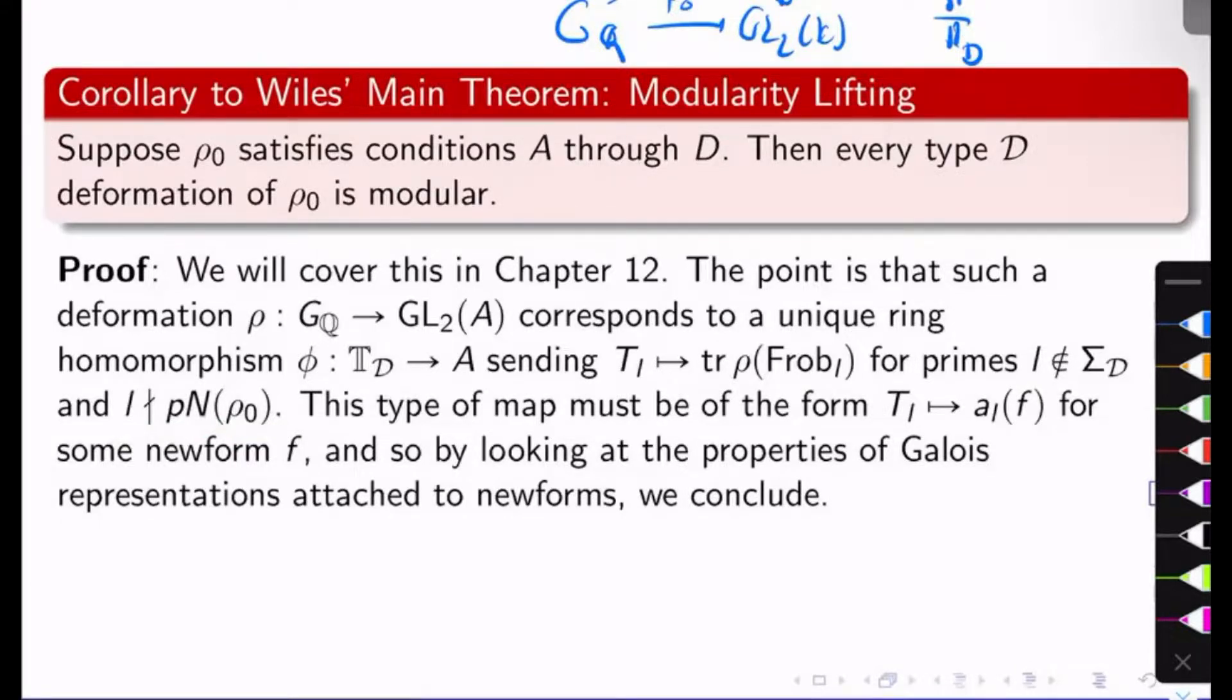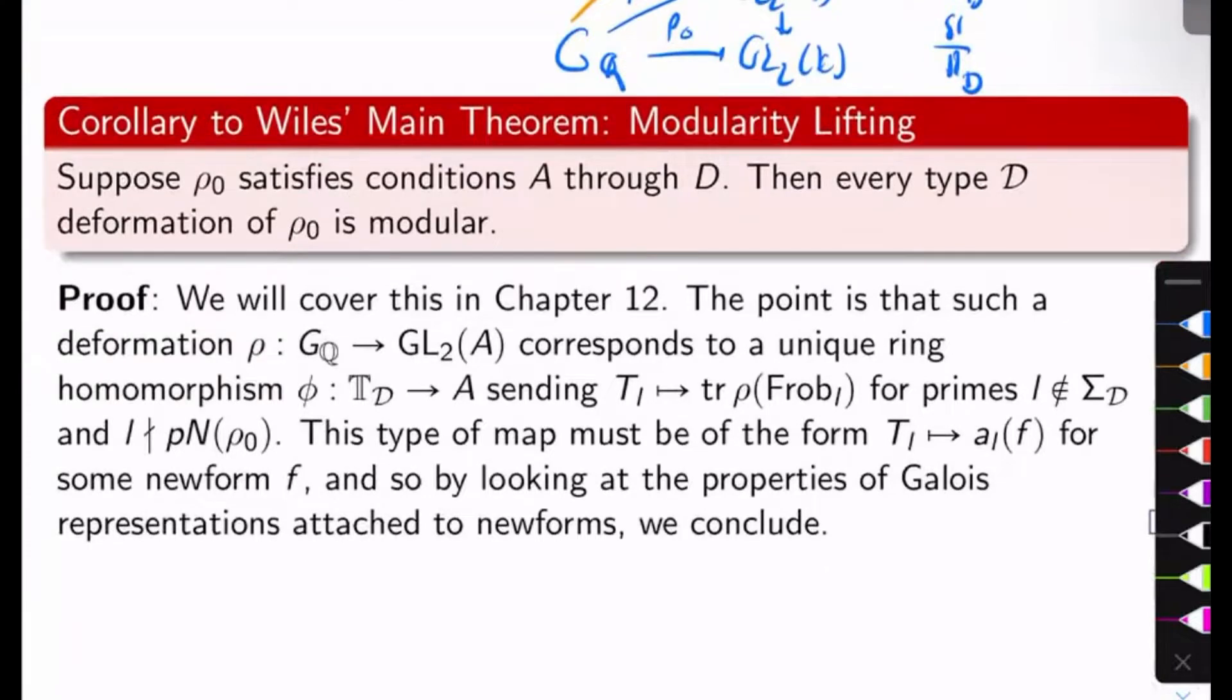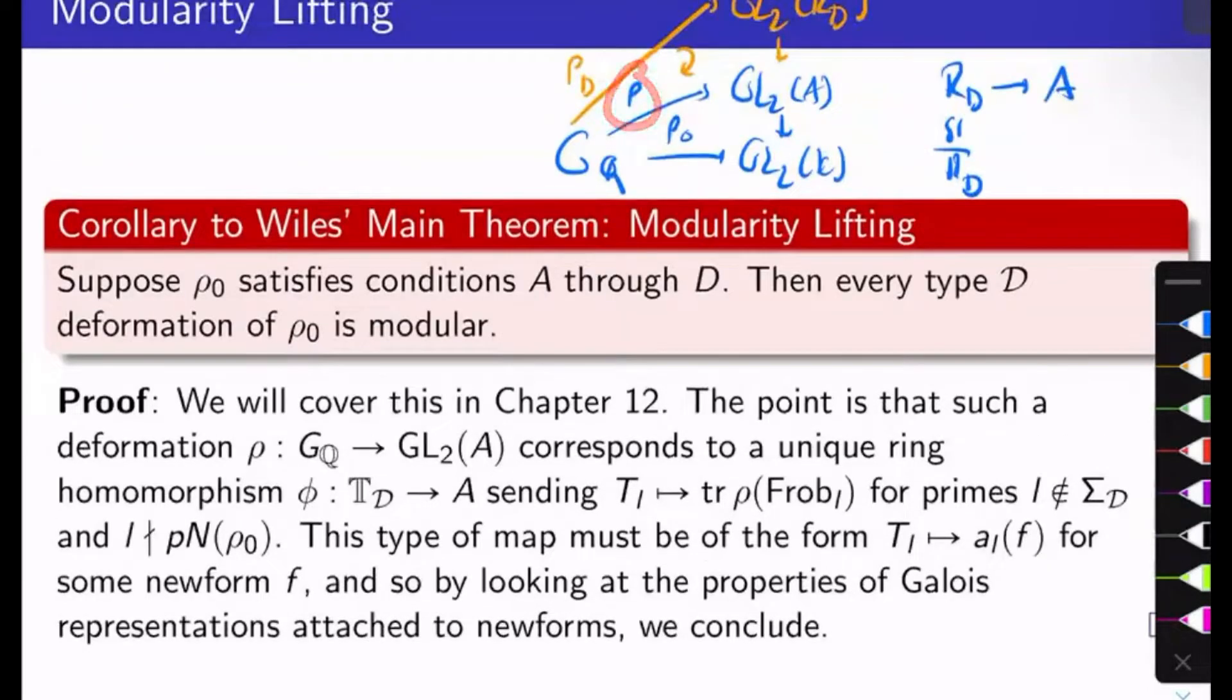But the thing is, because this is a ring homomorphism from the Hecke algebra, it's easy to show (and we'll talk about this in chapters 3 and 12) that this map also must be of the form T_L to a_L(f) for some newform f. But then you have trace of rho of Frobenius equaling a_L(f) for all but finitely many primes. And so by the properties of Galois representations attached to newforms that I covered in a previous video, you actually have that rho itself must be isomorphic to rho_f. And so there you go, your deformation is modular by definition.